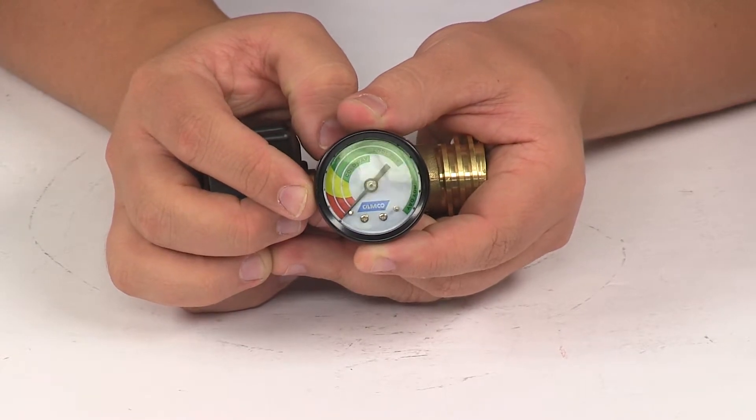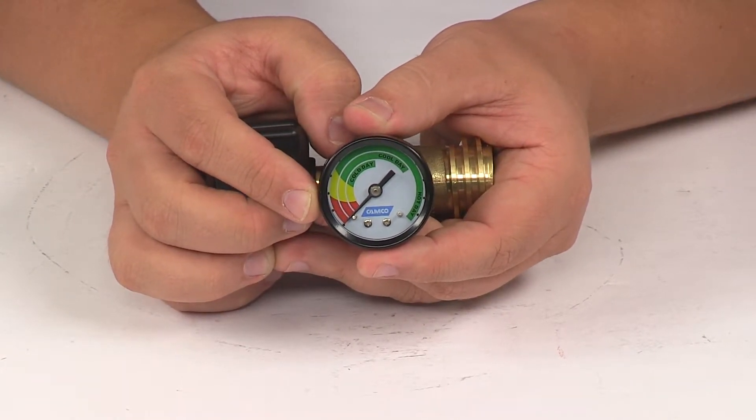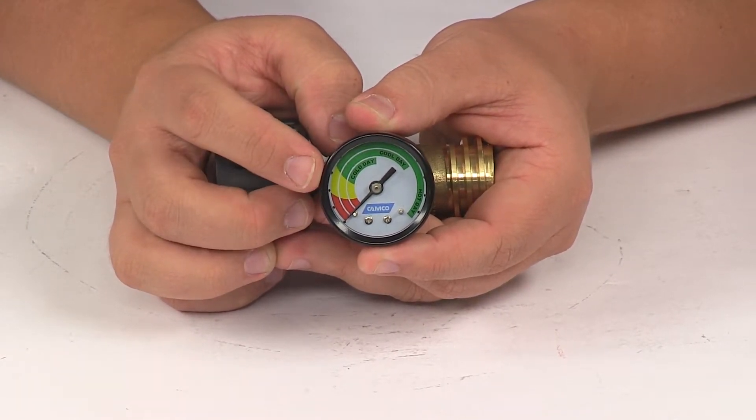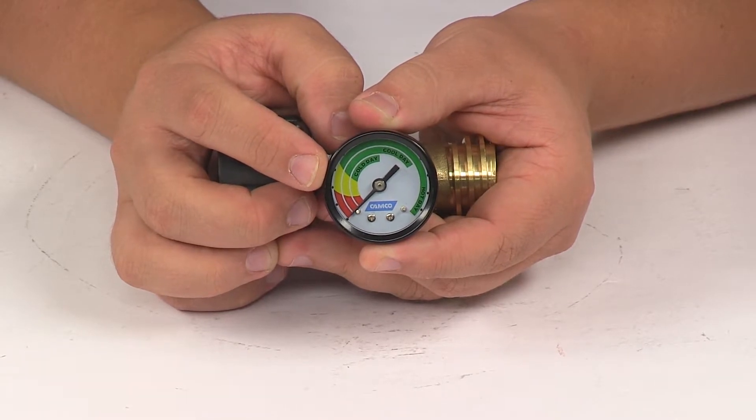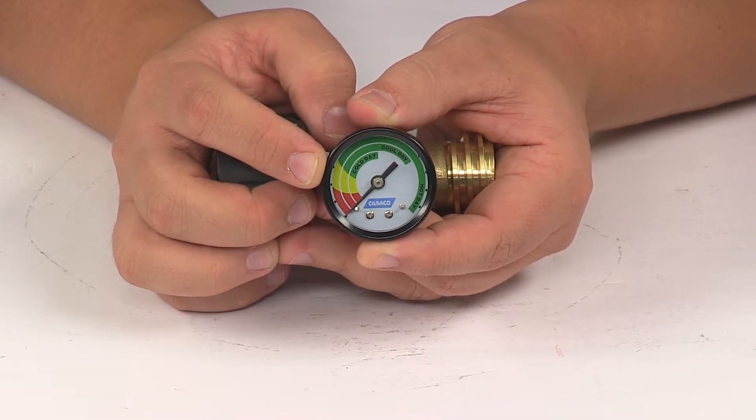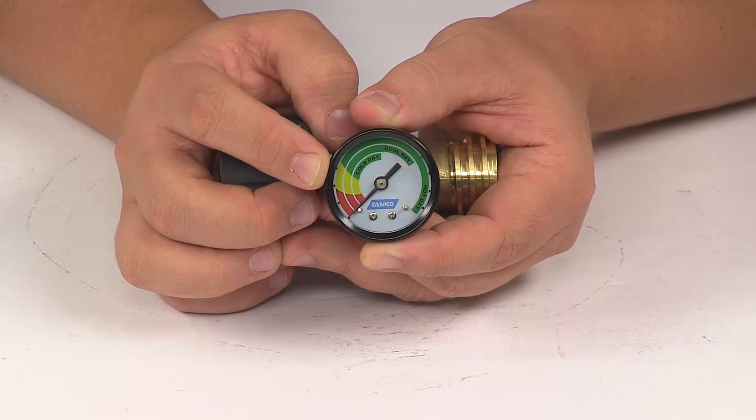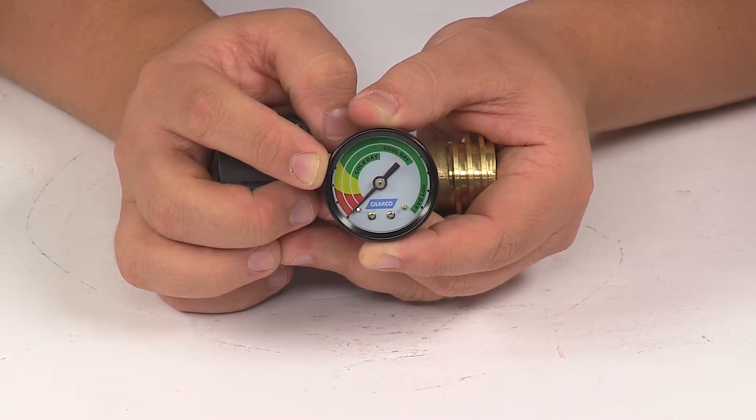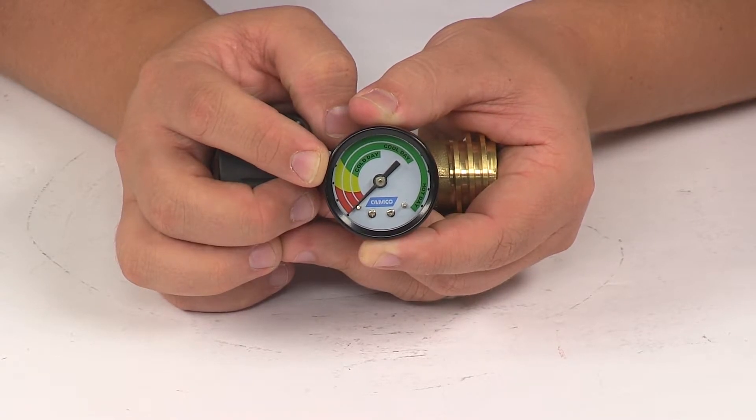Now I also want you to keep in mind that air temperature can affect the rate of propane use. So you'll notice that this unit references cold, cool day, and hot day. So when checking the dial for the propane level, be sure to read the colored area that corresponds to the air temperature that day in order to get the most accurate readings and information.